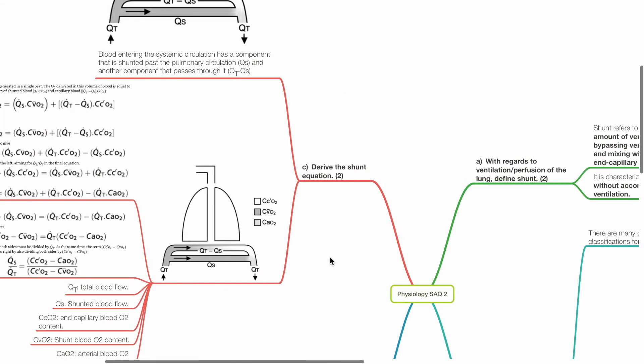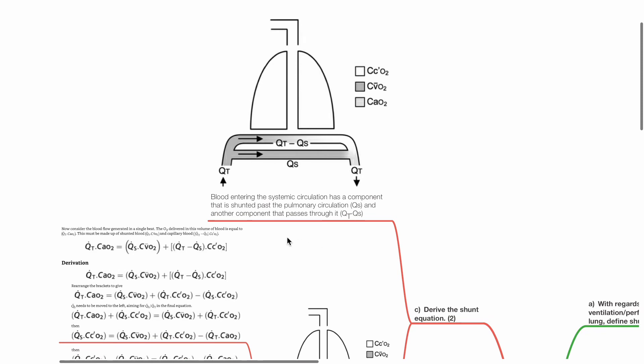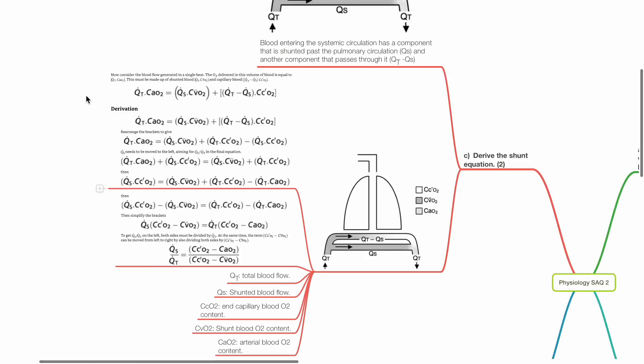Derive the shunt equation, 2 marks. Blood entering the systemic circulation has a component that is shunted past the pulmonary circulation, Qs, and another component that passes through it, Qt minus Qs. Consider the blood flow generated in a single beat.